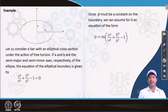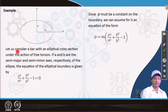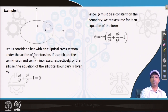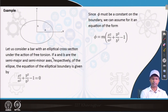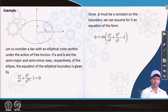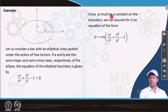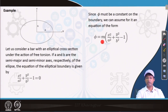The problem we will solve today is an elliptical section with semi-major axis a and semi-minor axis b under free torsion. Free torsion is necessary — unless it is free torsion, warping is difficult to observe. The equation of the elliptical boundary is x²/a² + y²/b² − 1 = 0. Since the stress function φ must be constant on the boundary, we assume it takes a form similar to the ellipse equation: φ = m(x²/a² + y²/b² − 1).